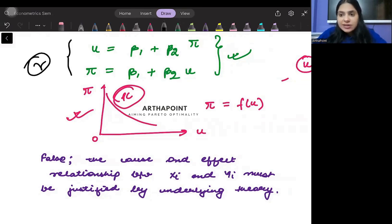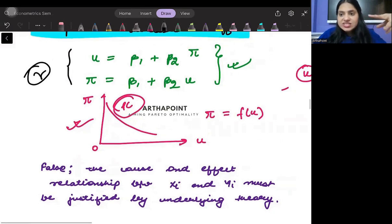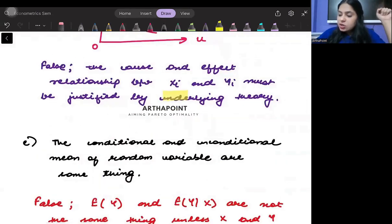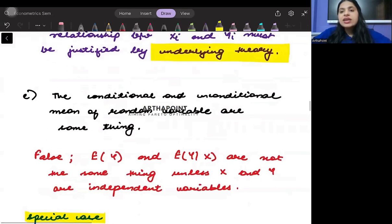So the cause and effect relationship is not what is determined through regression model. The causal effect relationship is actually determined through the underlying theory. Am I clear with it?